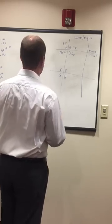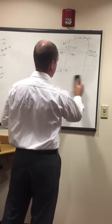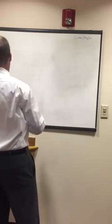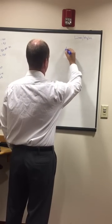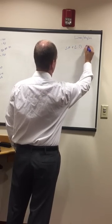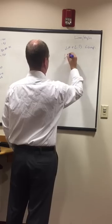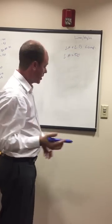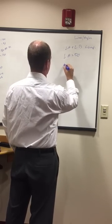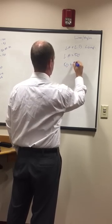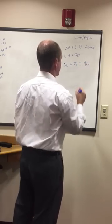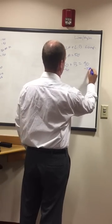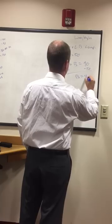Another possible question: what if it says angle A and angle B are complementary, and angle A equals 50 — find angle B? So we know A equals 50, so 50 plus B equals 90, because complementary means 90. Subtract 50, so B must be 40.